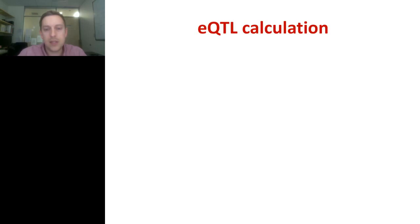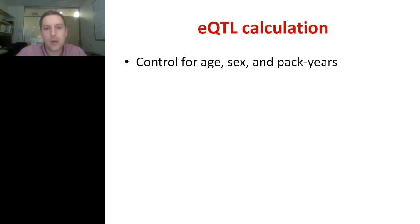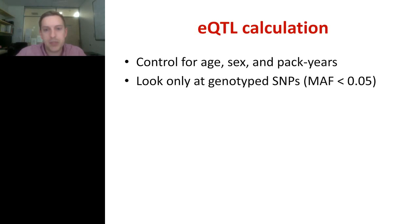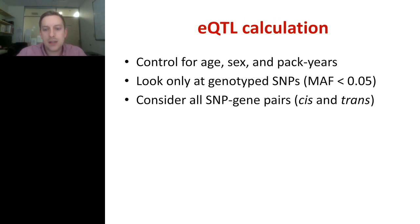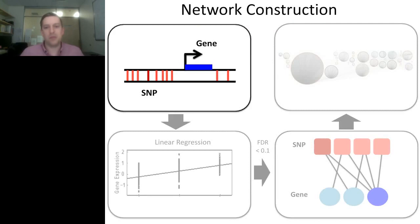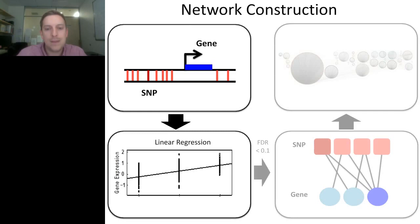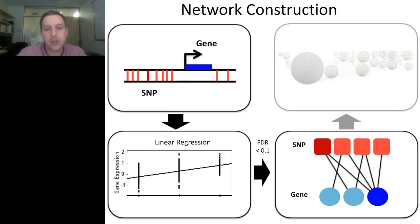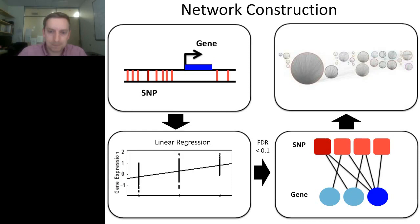For the eQTL calculation, we used matrix eQTL. We controlled for age, sex, and pack years. We looked only at the genotyped SNPs — we did not impute — and we excluded SNPs with a minor allele frequency less than five percent. After that, we used matrix eQTL to consider all possible SNP-gene pairs. So as an outline of how we construct our network: we take a SNP and a gene, perform the linear regression using matrix eQTL, and if the result — after doing all tests and FDR correction for cis and trans separately, both at an FDR of 10 percent — if the SNP and gene association has an FDR less than 10 percent, we draw a link between them.